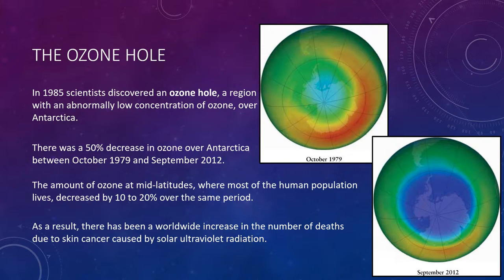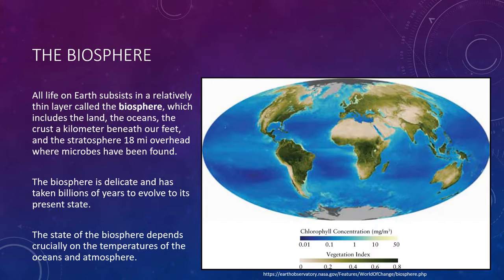The point of the ozone example is that we can clearly affect our atmosphere, both for the worse and the better. The Montreal Protocol proved that the world could come together and take action even on things such as climate change — we have direct evidence of this. Now, shifting to our discussion of global warming: all life on Earth subsists in a relatively thin layer known as the biosphere, which includes the land, oceans, the crust a kilometer beneath our feet, and even up to the stratosphere 30,000 meters overhead where microbes have been found. The biosphere has taken billions of years to evolve to its present state and is a delicate and highly complex system in which plants and animals depend on one another for their mutual survival. The average productivity of the biosphere changes little from year to year, but there are small variations.